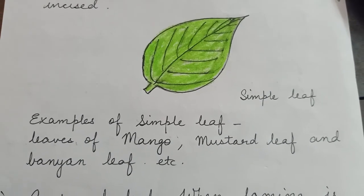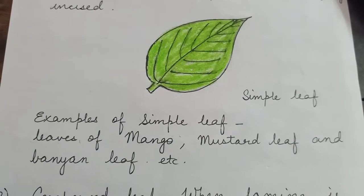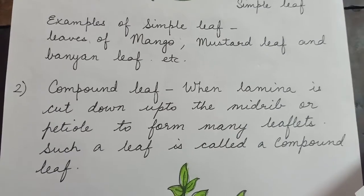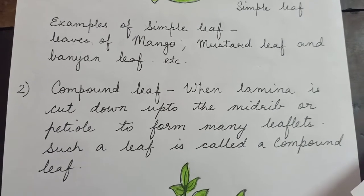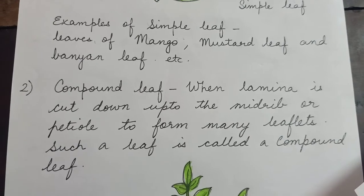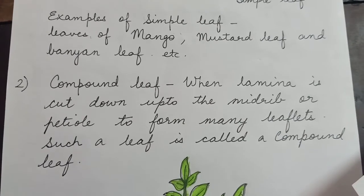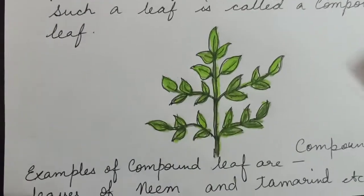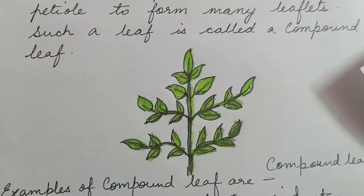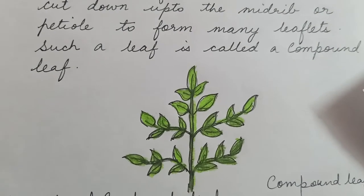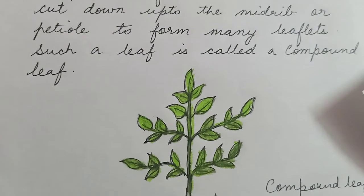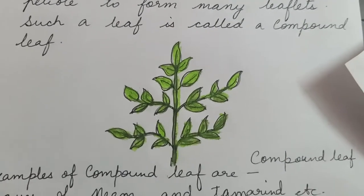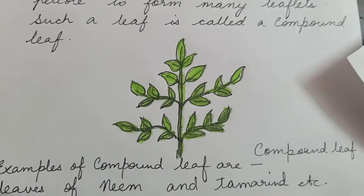The second type is compound leaf. When the lamina is cut down up to the midrib or petiole to form many leaflets, such a leaf is called a compound leaf. Here you can see the picture of a compound leaf, in which there are many leaflets arranged around the midrib of the leaf.